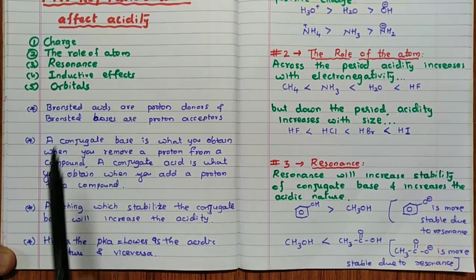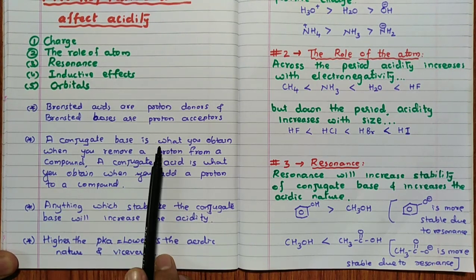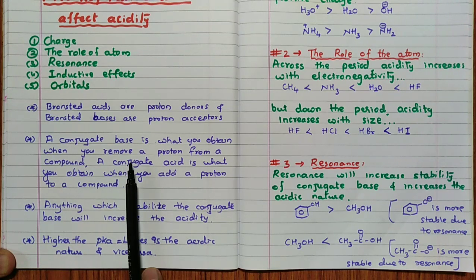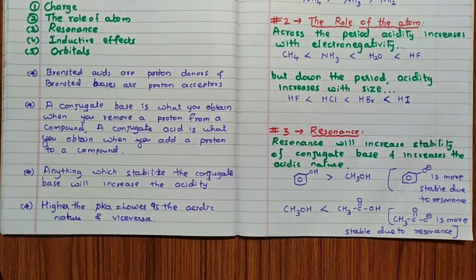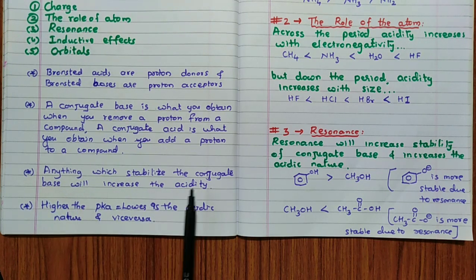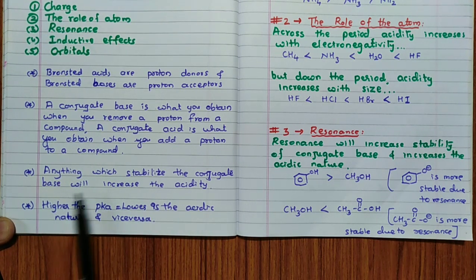Here we are talking mainly about Bronsted acidic nature. Bronsted acids are the proton donors and Bronsted bases are the proton acceptors. A conjugate base is the one which you obtain when you remove a proton. When you add a proton, you will get the conjugate acid for that particular substance. Very important: acidic nature depends on the stability of the conjugate base. Anything which stabilizes the conjugate base will increase the acidity.